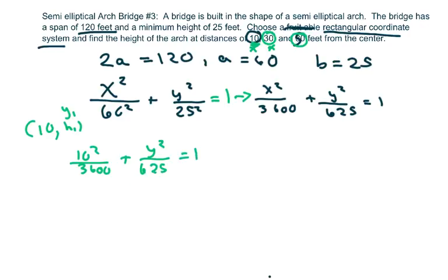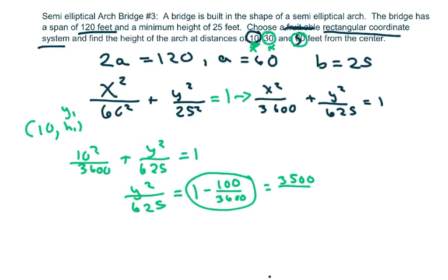I'm going to skip some steps here since we did this problem before. So it's $1 - \frac{100}{3600} = \frac{3500}{3600}$, which equals $\frac{y^2}{625}$.